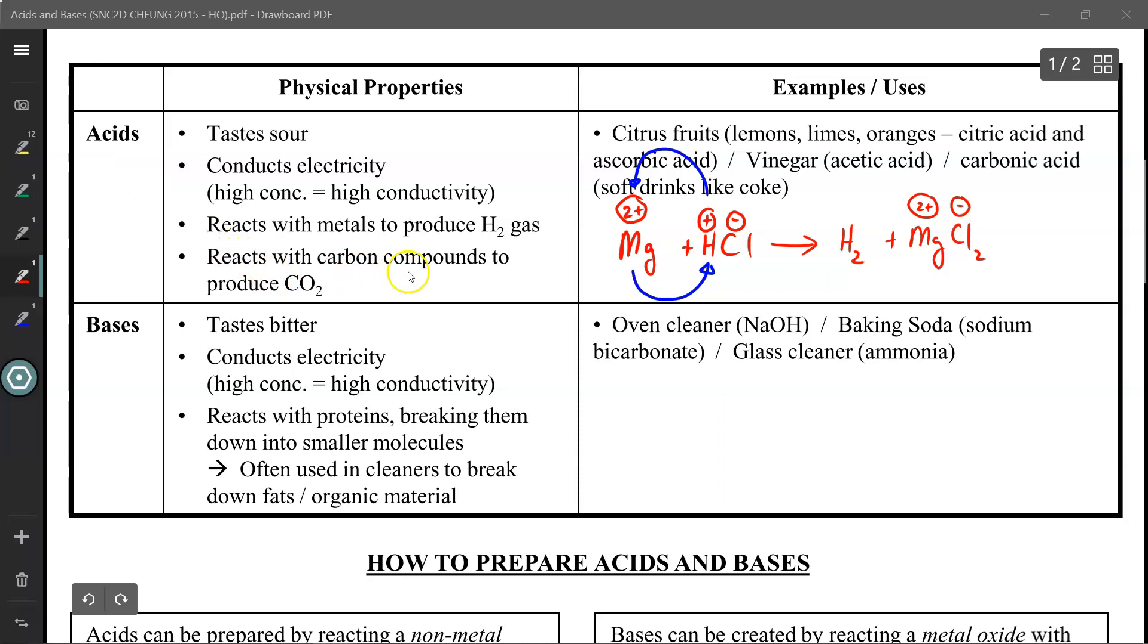Acids can also react with carbon-based compounds to produce CO2, but we'll look at those reactions in a future course. Common examples and uses of acids in the home include citric fruits like lemons, limes, and oranges, vinegar (acetic acid), and carbonic acid typically found in soft drinks. Acids are quite commonplace in our everyday lives.